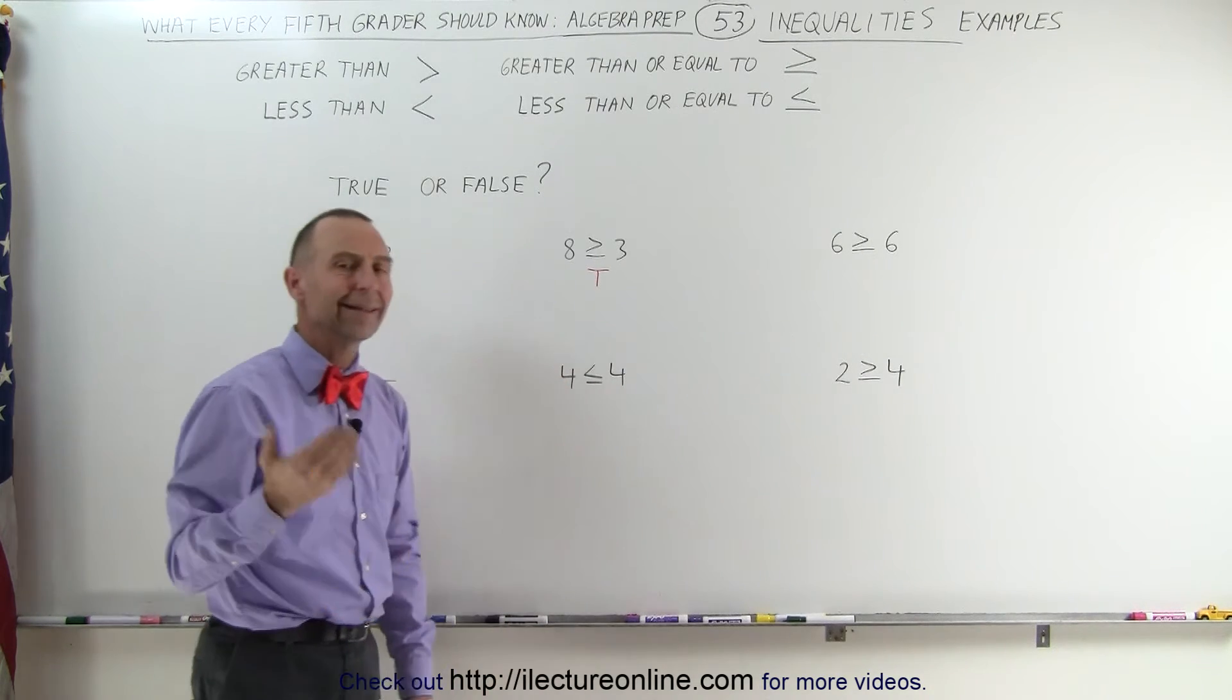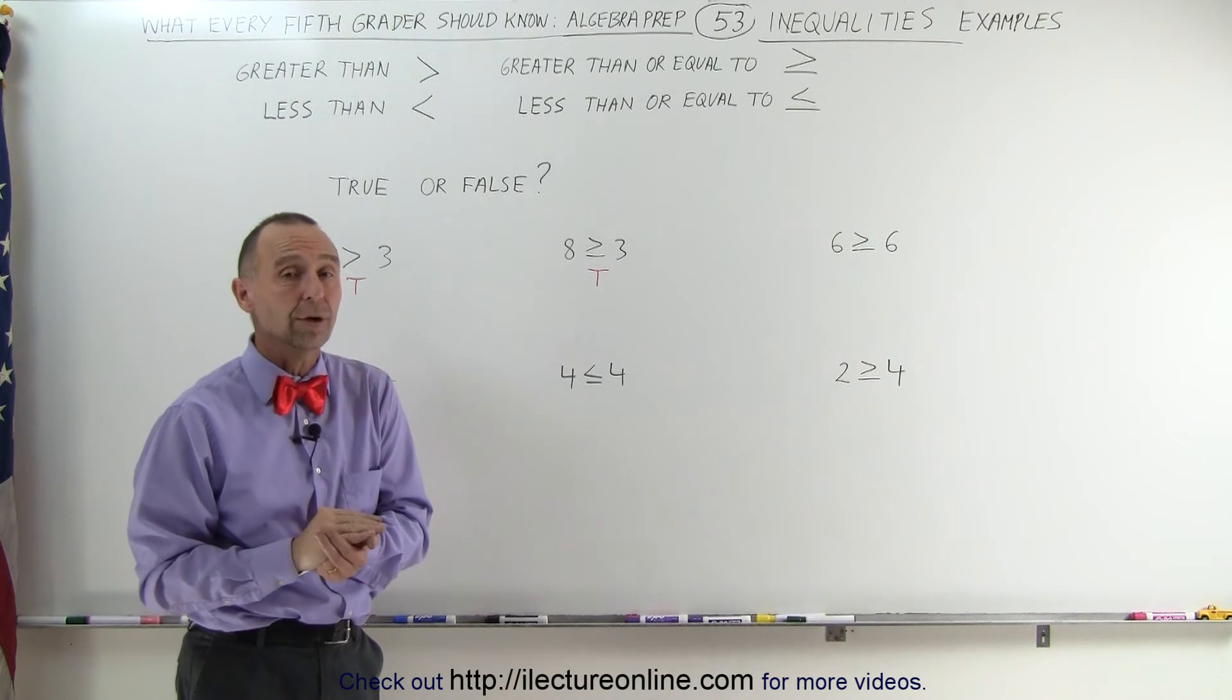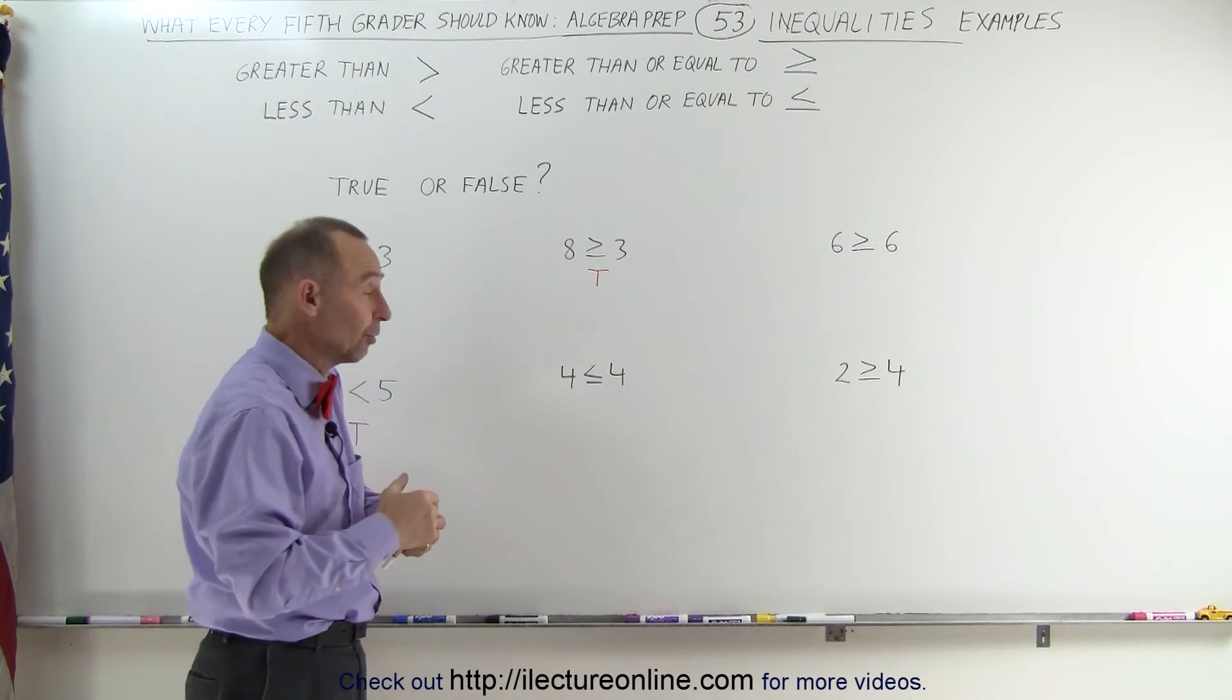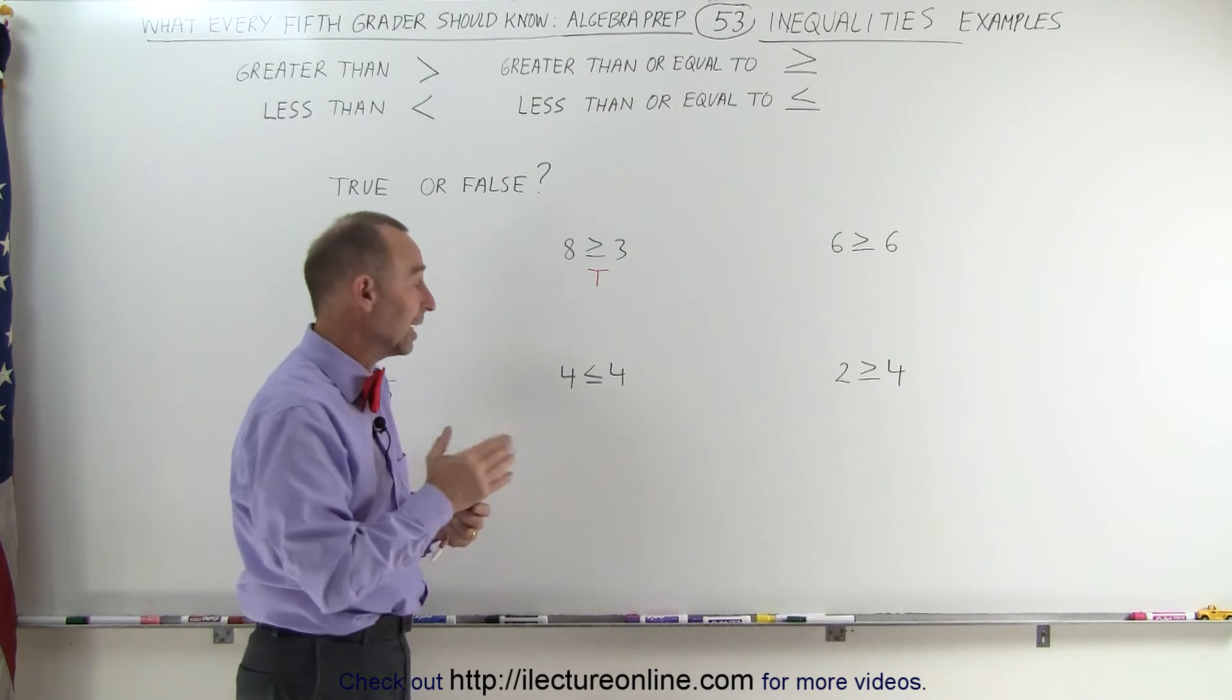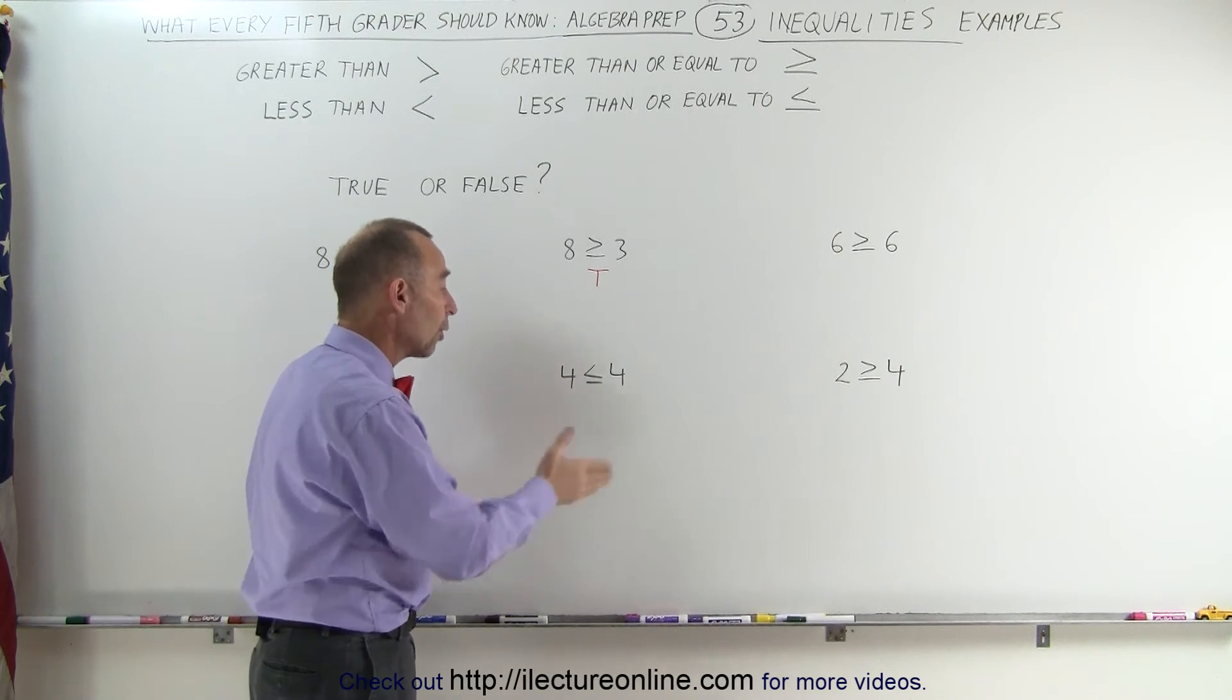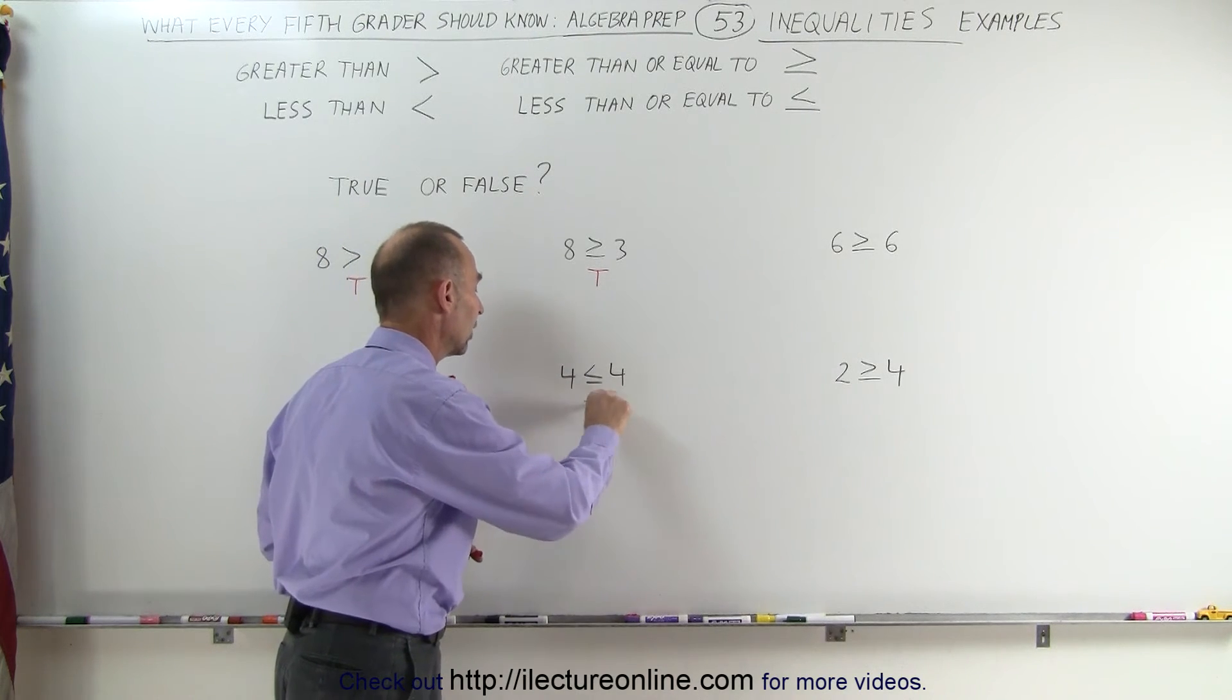How about this statement, 4 less than or equal to 4? We definitely know that 4 is not less than 4, but is it equal to? And the answer is, of course, yes. 4 is equal to 4, since it only needs to abide by one of the conditions. Either it is less than 4, or it is equal to 4. Since one of them is true, this expression is true.